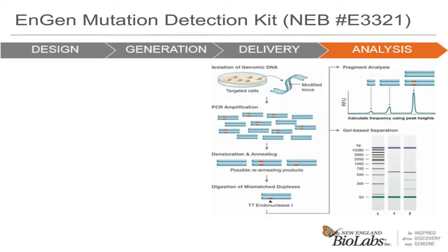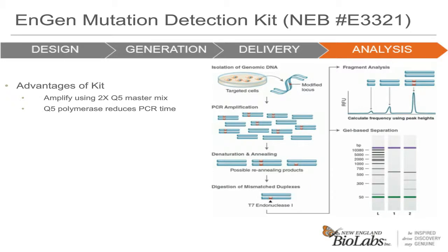In addition to standalone T7 endonuclease 1, we have developed a kit that simplifies the mutation detection process. The NGEN mutation detection kit is a T7 endonuclease-based assay kit that combines a Q5 polymerase master mix, T7 enzyme, and a control mix for simplification. The advantages are that it was developed using a master mix formula of Q5 for simplified PCR setup. The Q5 polymerase is also much faster than other polymerases, reducing total reaction time. The kit is formulated such that no cleanup of the PCR reaction is necessary before proceeding with T7 endonuclease digestion, and there is no concern about buffer compatibility.